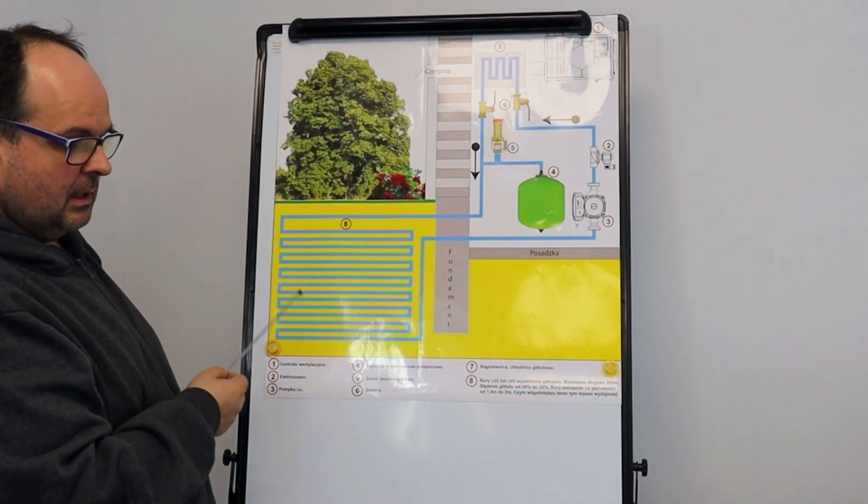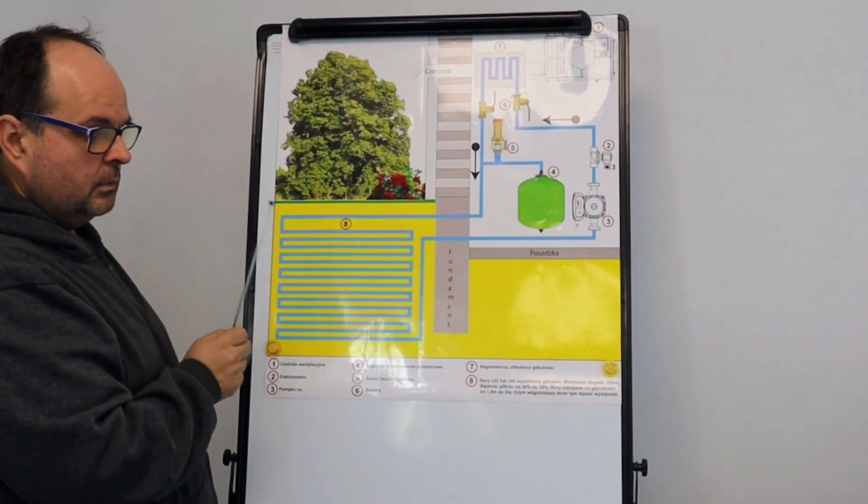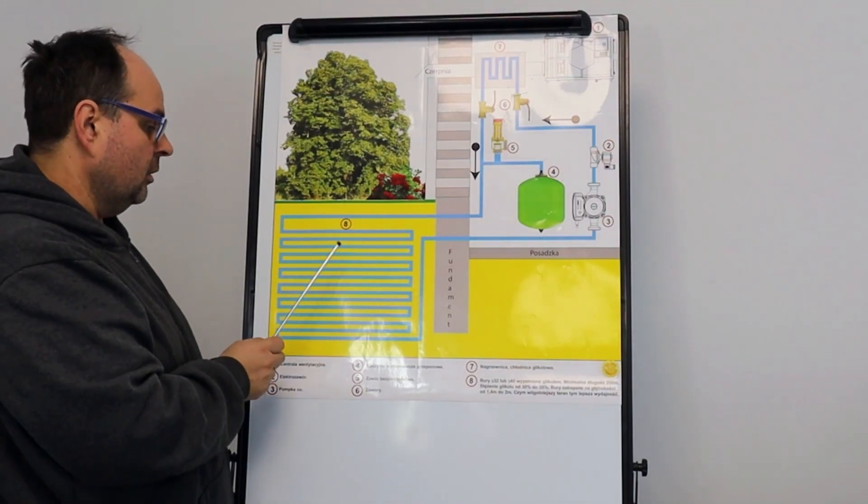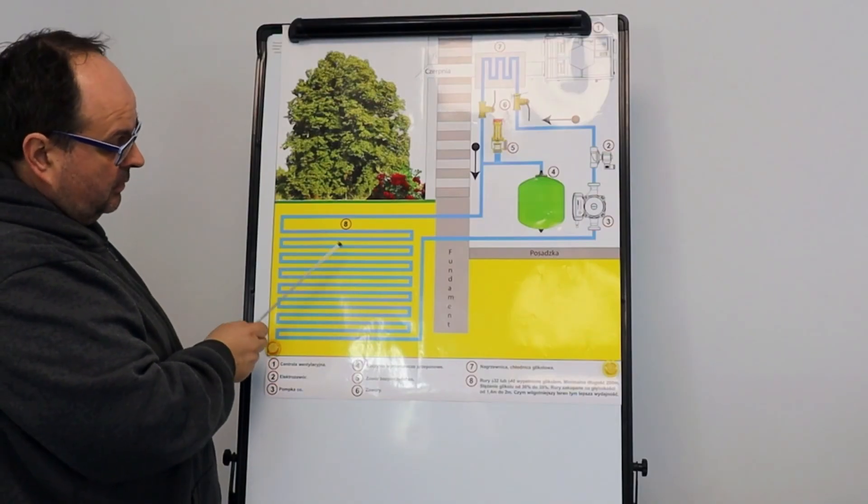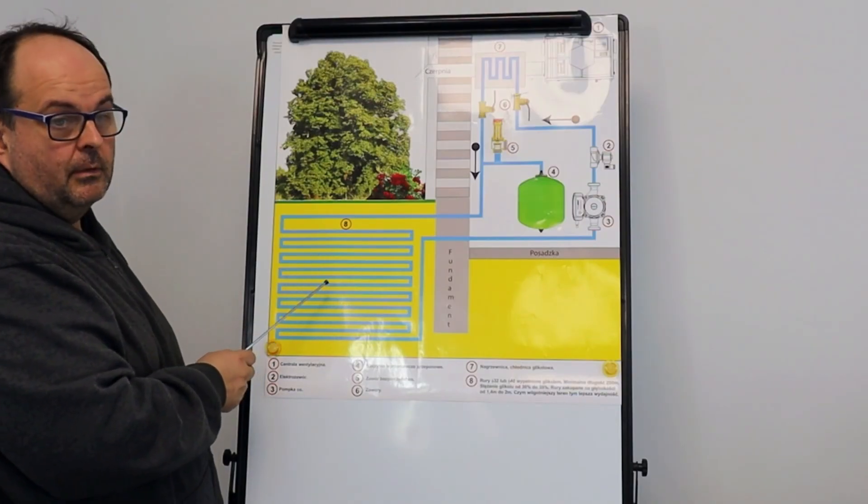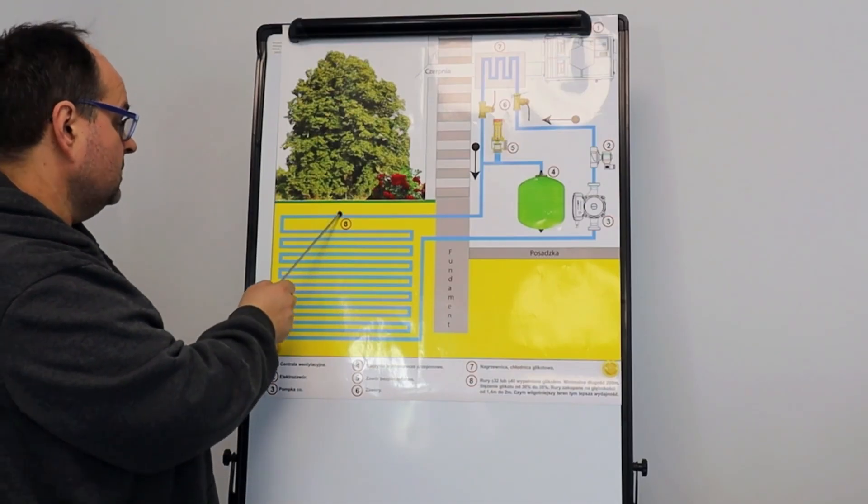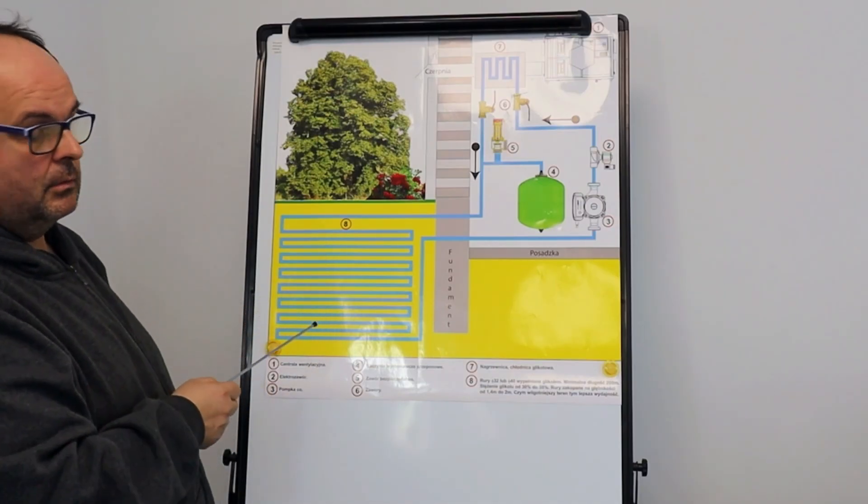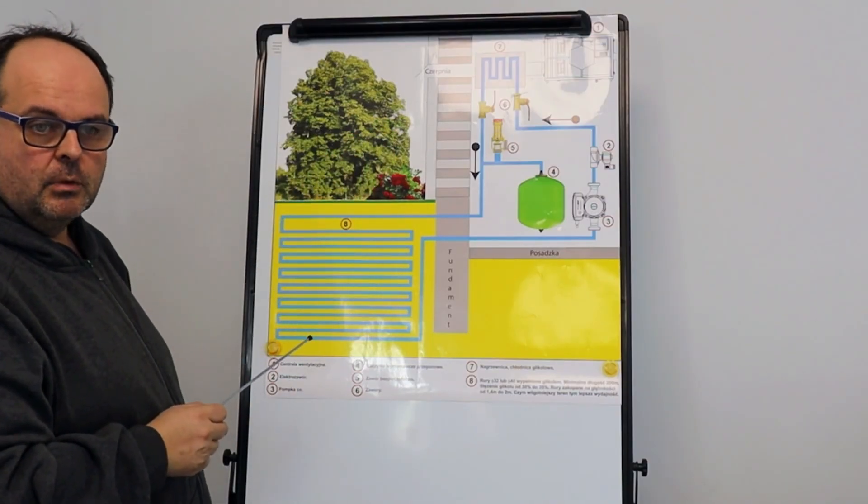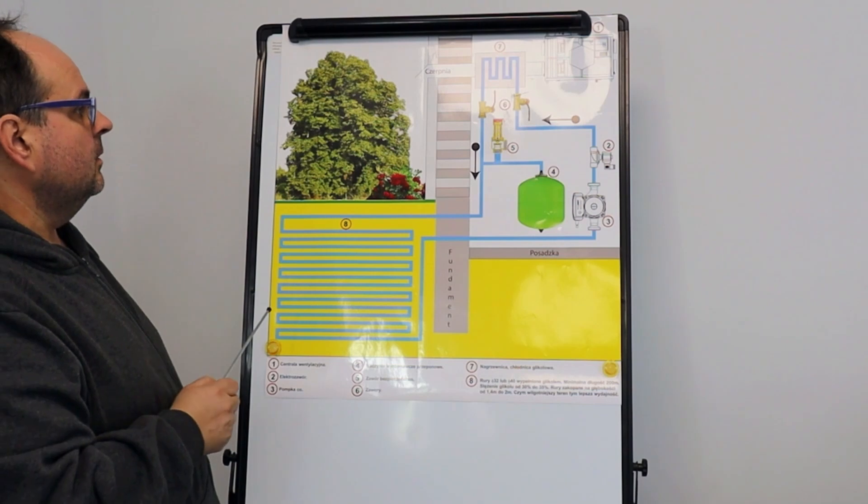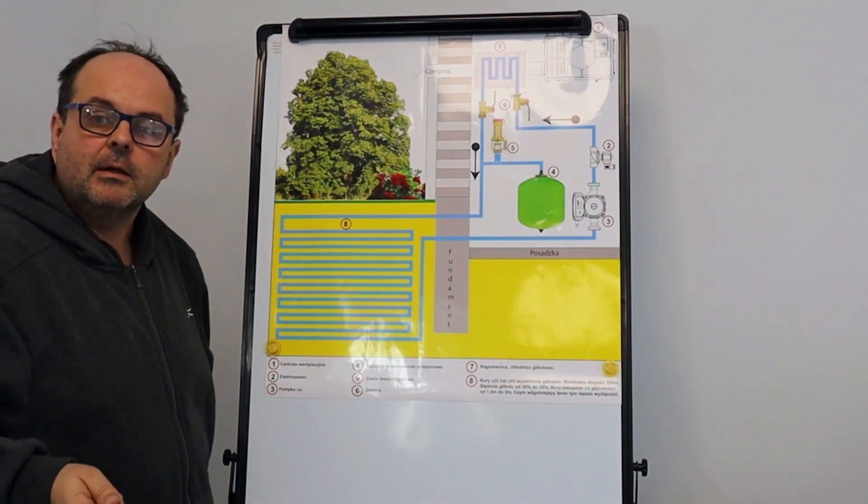As I said, it's a cheap system that will definitely pay for itself. But we must install it in a place where there is high ground moisture, where there is water. If you installed something like this in a river at a depth of two meters, you would have air conditioning with a power of, say, even 10 kilowatts. You have winter heating with a power of, say, two or three kilowatts.